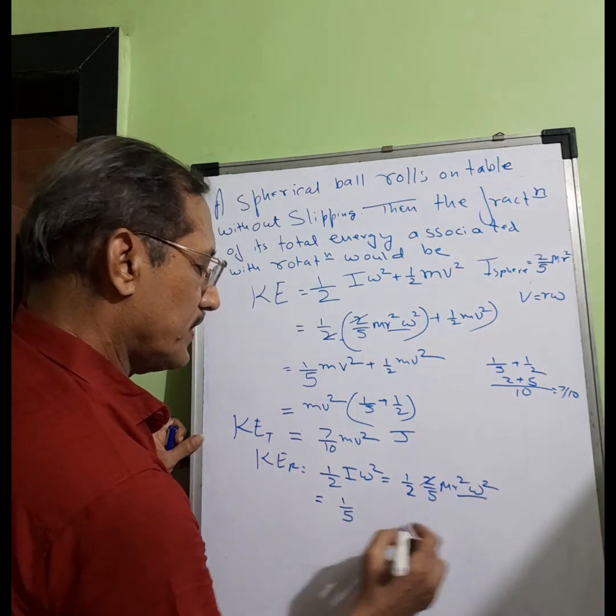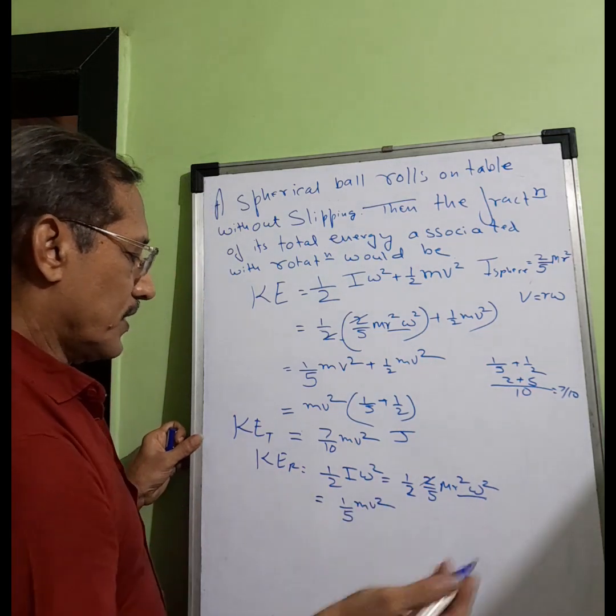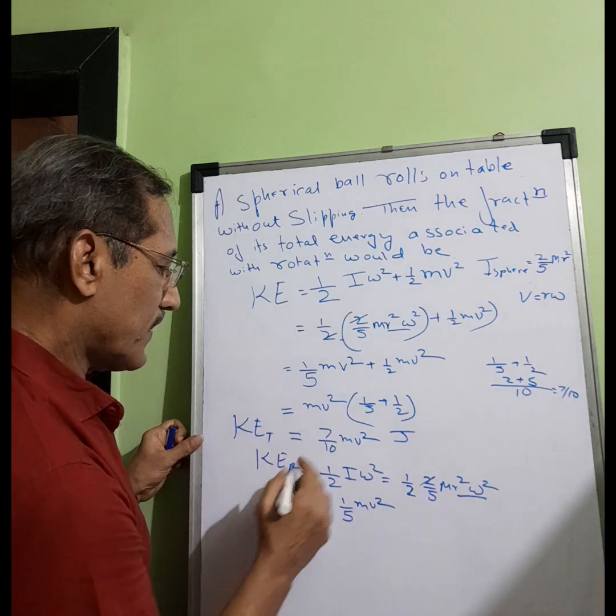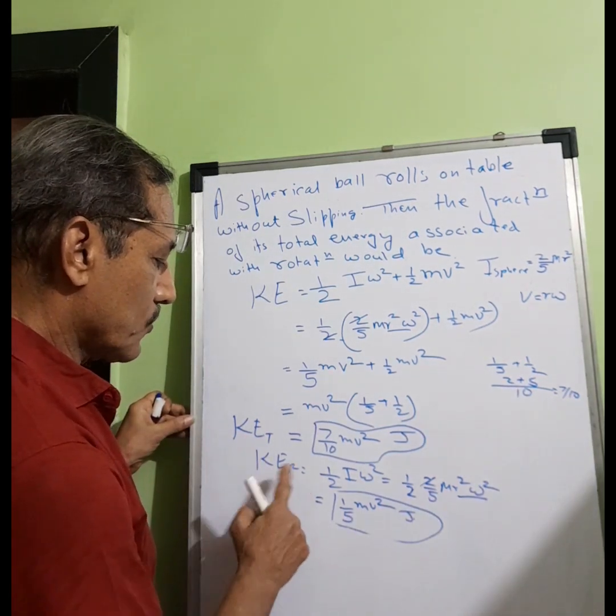So if I intend to find out the fraction, what I do is: rotation we got, KE total we got, KE rotation. So we have got to find KE rotational to KE total.